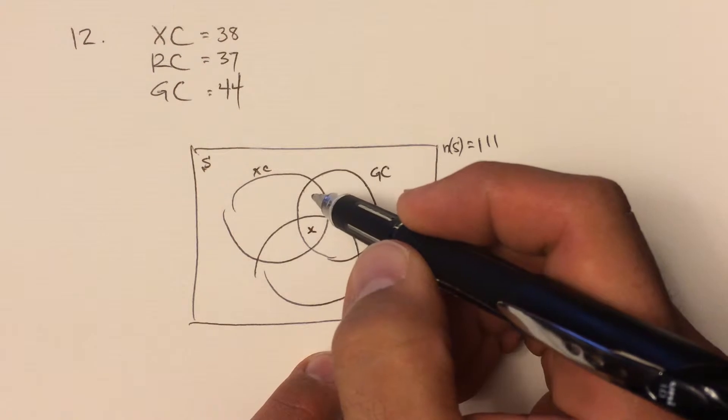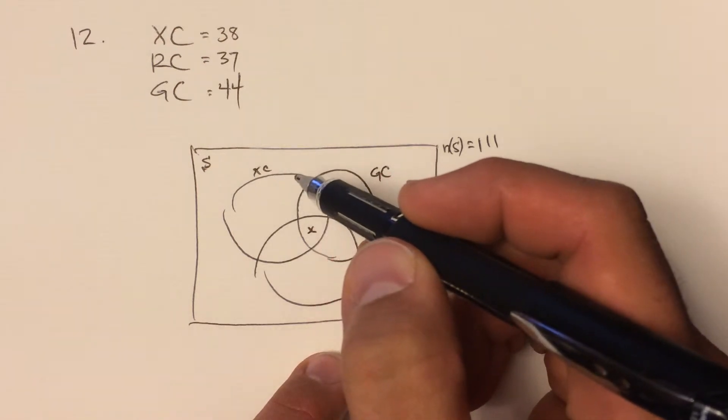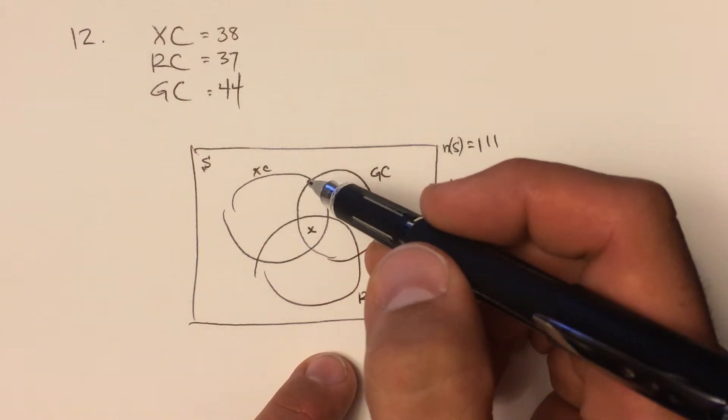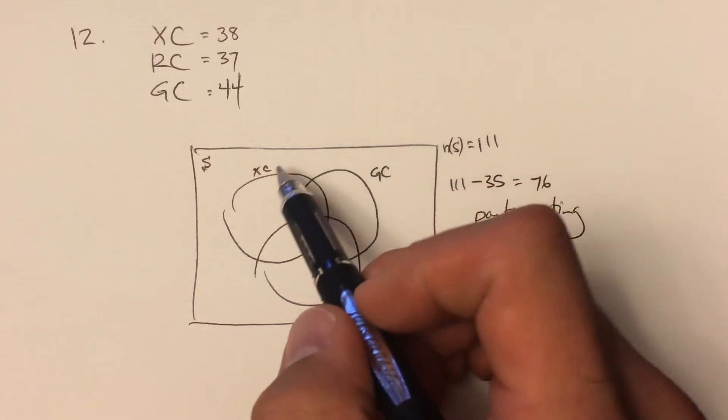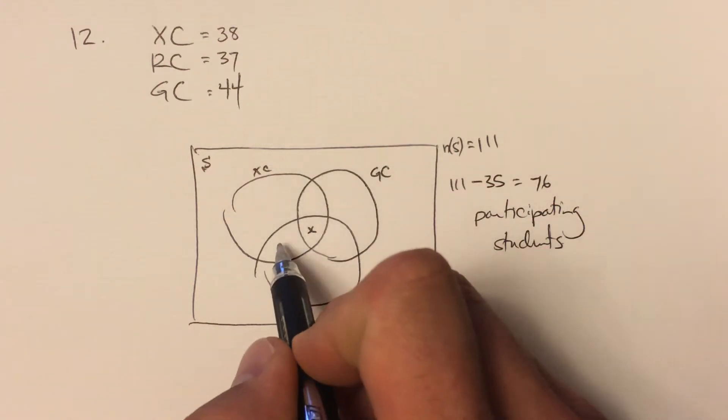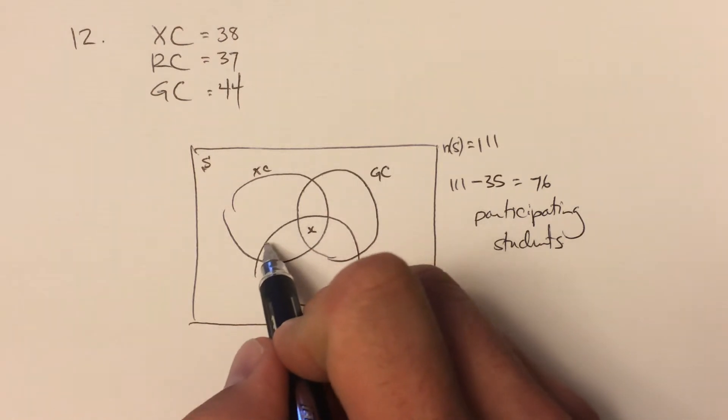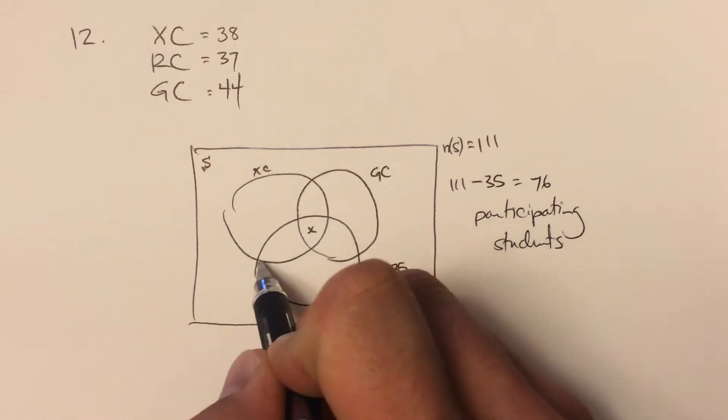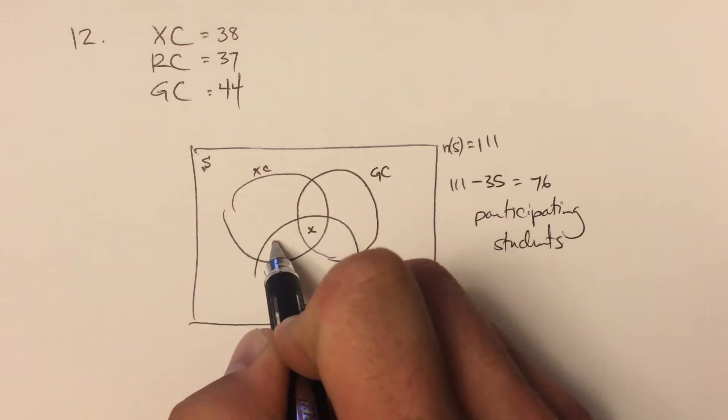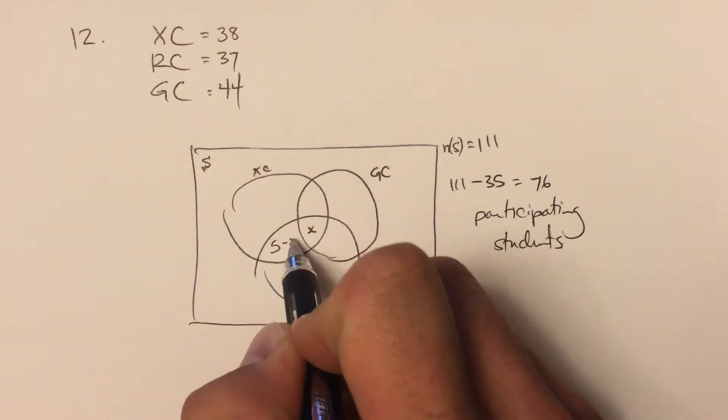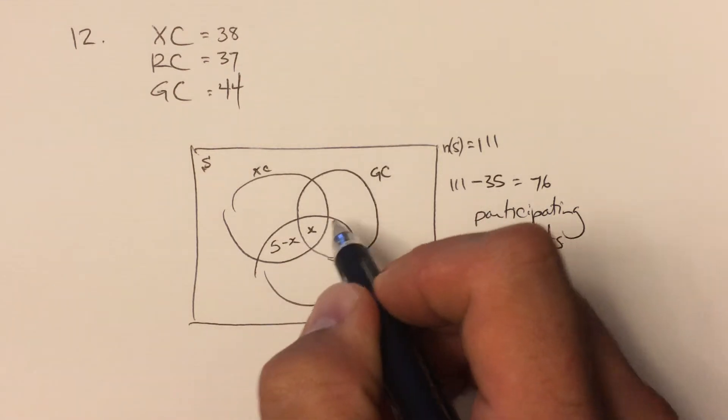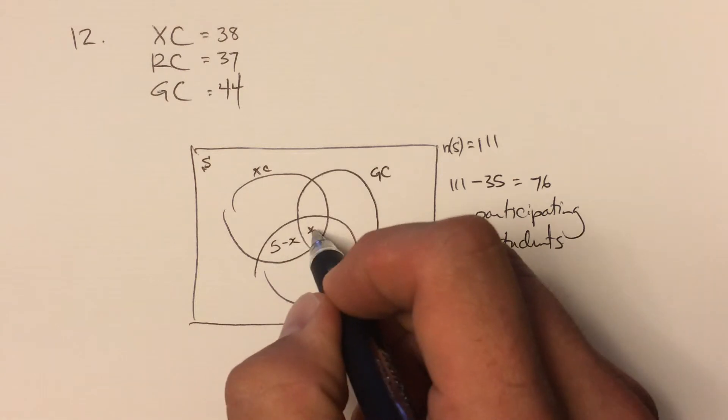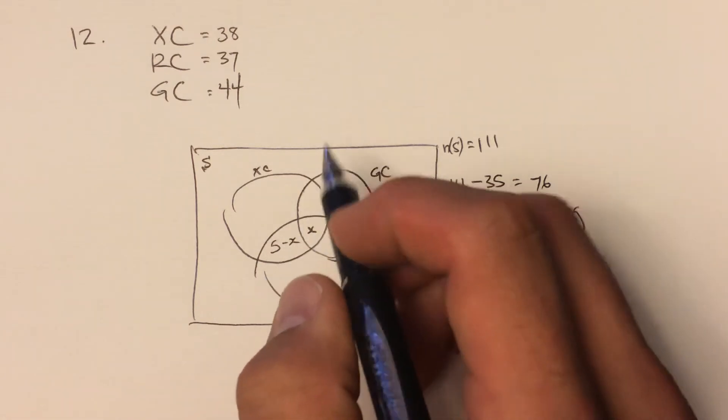But we do know some other stuff. So we know from the question, let me look at this in order, five students participate in robotics and cross-country. So there's cross-country, there's robotics, so five students participate in both. That's this whole leaf-shaped section here with these two regions that include five students. So this is some number, and this is five minus that number. So if this was a four here, for example, this would be one. That's the idea. So X and five minus X together, that adds up to five students.